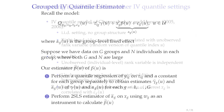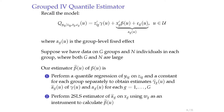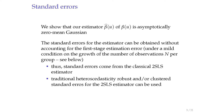Now let me describe our estimator—the Group IV Quantile estimator. It's a two-stage procedure. On the first stage, we run a quantile regression separately for each group of the dependent variable Y on individual-level covariates Z and a fixed effect, estimating fixed effect alpha_G in each group. If the number of observations per group is large, we get a consistent estimator of the fixed effect. On the second step, we run two-stage least squares of the estimated fixed effects on covariate X using W as an instrument.